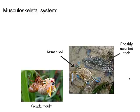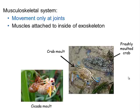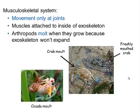For the musculoskeletal system, movement only occurs at the joints. Muscles attach to the inside of the exoskeleton. Some organisms can molt as they grow because the exoskeleton will not expand — that's why you'll find shed shells, since once they grow, the old shell doesn't grow with them.